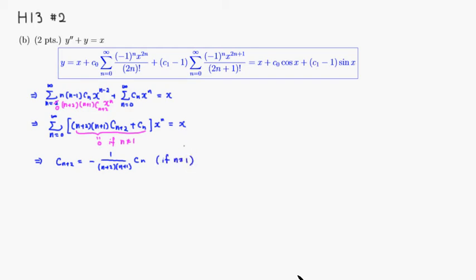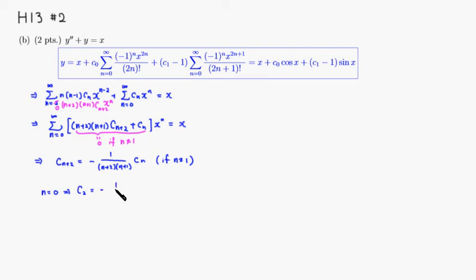Let's find a pattern. For n equals 0: c2 equals negative 1 over 2 times 1, which is negative 1 over 2 factorial, times c0.